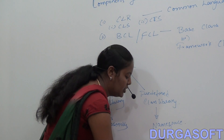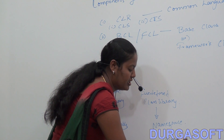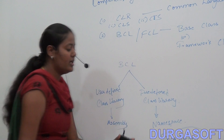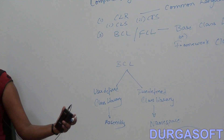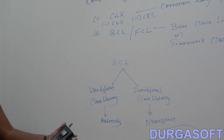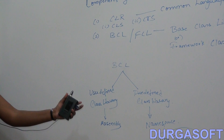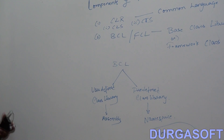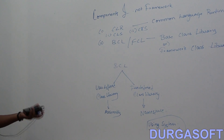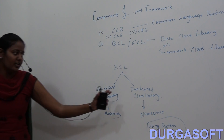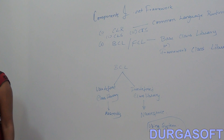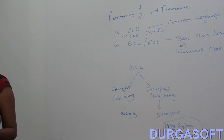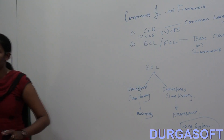A namespace is a collection of predefined classes and methods. In .NET, 'using System' is an example — 'using' is the keyword and 'System' is the namespace. The System namespace contains a collection of predefined classes and methods. Using this predefined class library, we can develop applications in less time because the classes and methods are already built in.